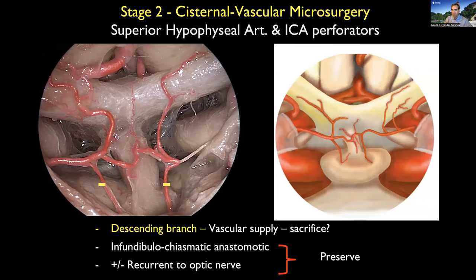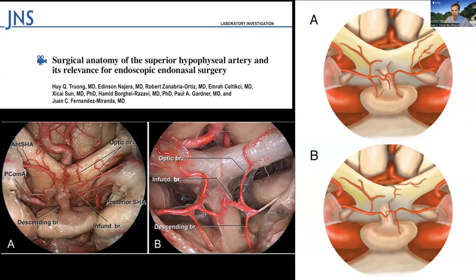A key understanding for the next stage is the cisternal anatomy, and specifically the microvascular anatomy of the superior hypophysial arteries. We describe these with different branches: a main stem giving the infundibulochiasmatic branch, which anastomoses with the contralateral side; a large branch going to the optic nerve — the recurrent artery to the optic nerve; and a descending branch that usually goes to the diaphragm or upper pituitary gland, which we often have to sacrifice because it supplies the tumor. By cutting this artery, we can displace the main stem of the superior hypophysial artery and preserve vascular supply to the optic nerve and pituitary stalk.